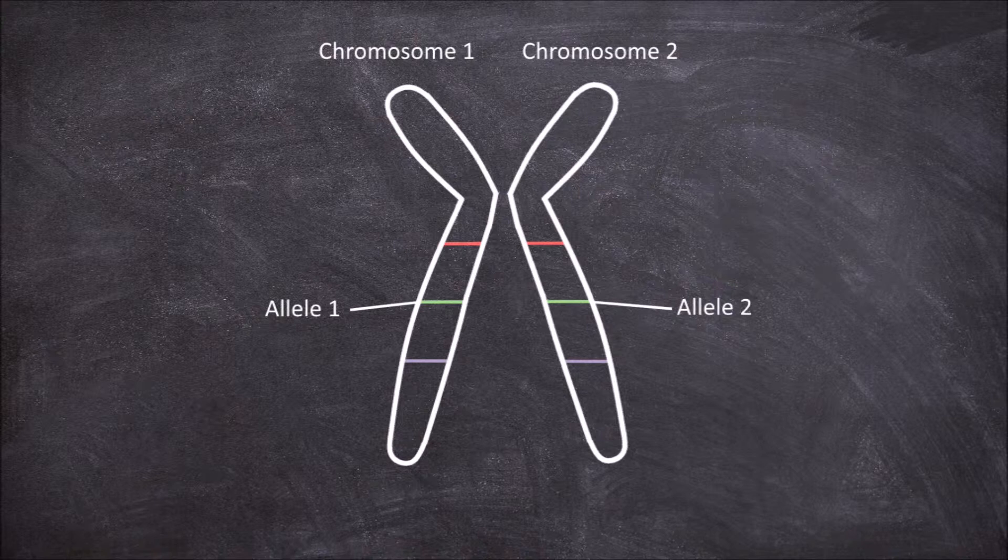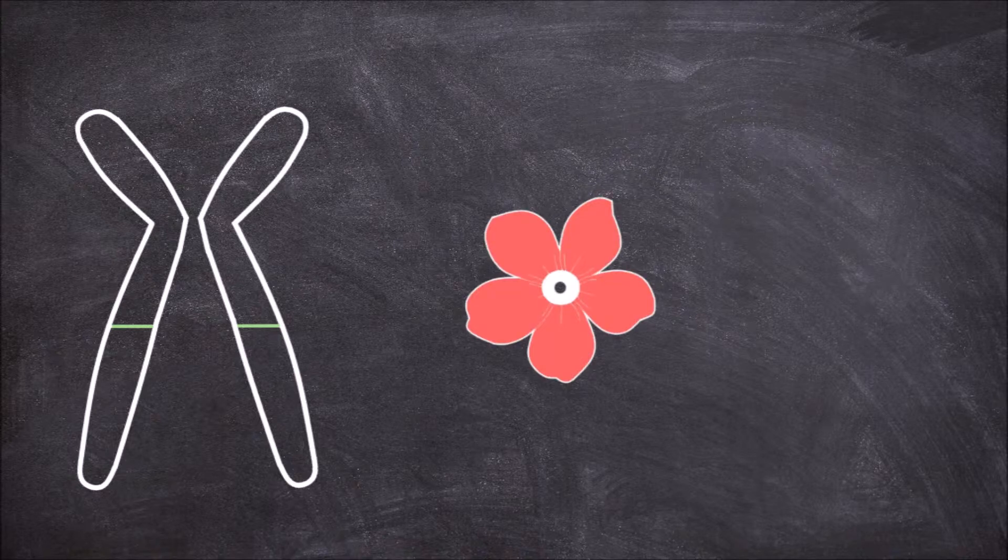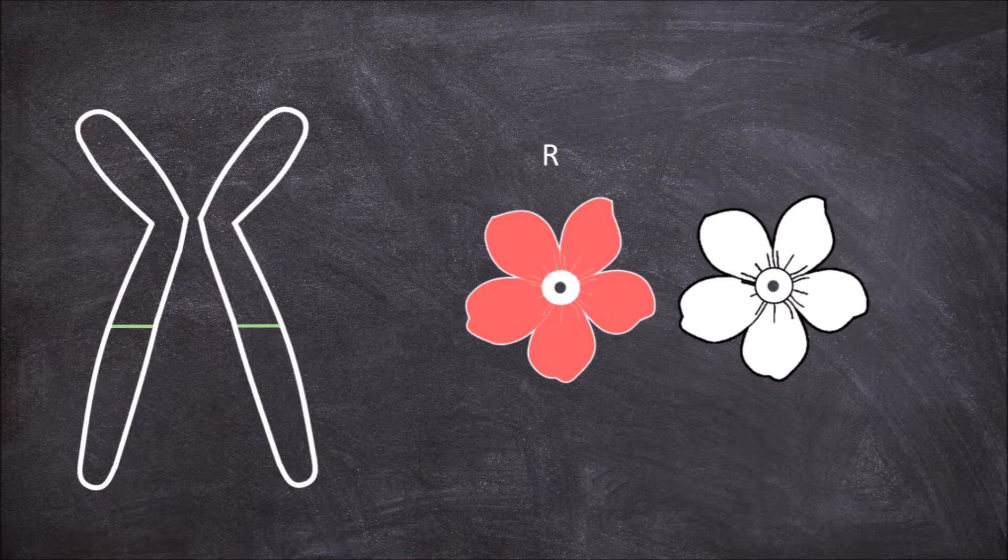If we take a theoretical example of flower color in a plant, and say the plant has two flower colors, red or white. In this example the capital R codes for the dominant red flowers, and the little r codes for the recessive white flowers.